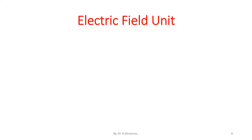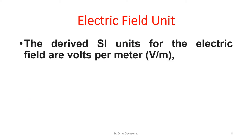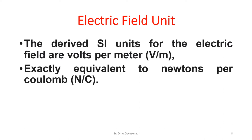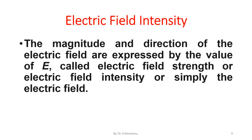The derived SI units for the electric field are volts per meter. The magnitude and direction of the electric field are expressed by the value of E, called electric field strength or electric field intensity, or simply the electric field.